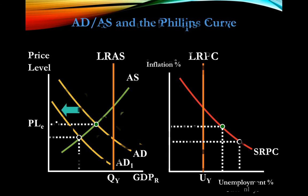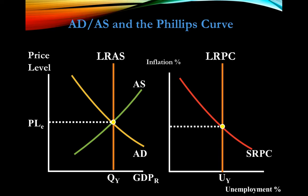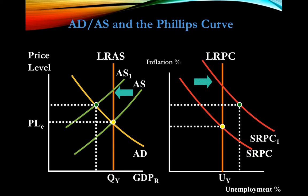Here we have an economy in equilibrium with our long-run and short-run Phillips Curve. When we have stagflation — cost-push inflation, a decrease in aggregate supply — unemployment is increasing and price level is increasing as well. This shifts our Phillips Curve to the right. A movement up and to the left on our AD/AS graph moves as a mirror image up and to the right on our Phillips Curve. The bottom line: shifts of aggregate supply shift the Phillips Curve; shifts of aggregate demand move along the Phillips Curve.